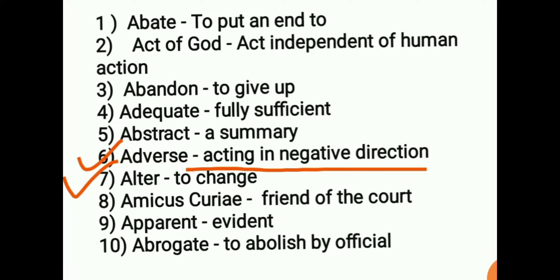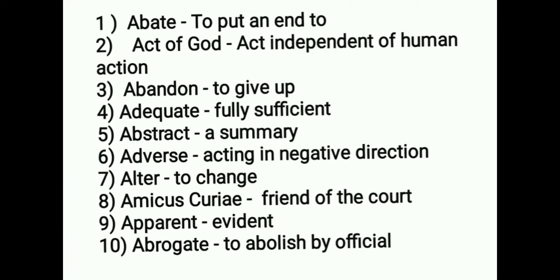Seventh is alter, which means to change. Eighth is amicus curiae — that is a Latin term meaning friend of the court, and this one is important. Ninth is apparent, which means evident. Tenth is abrogate, which means to abolish by officials — for example, when we say abrogation has happened, it means something has been officially abolished.